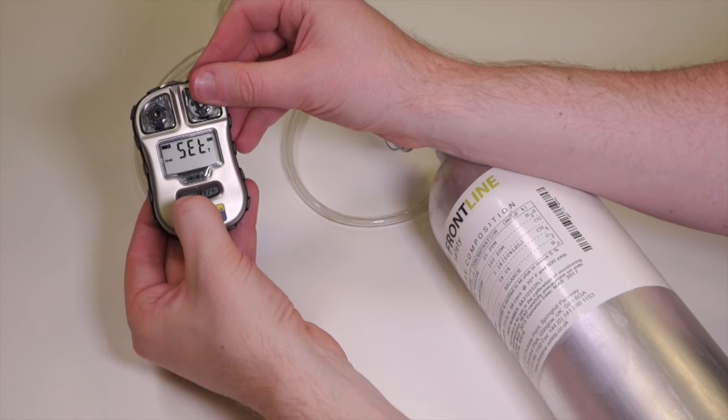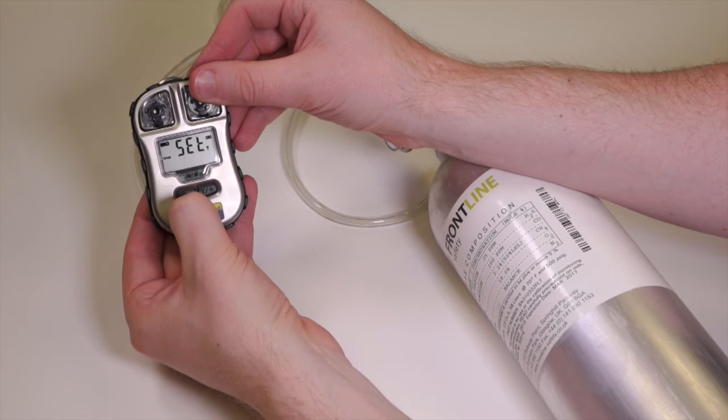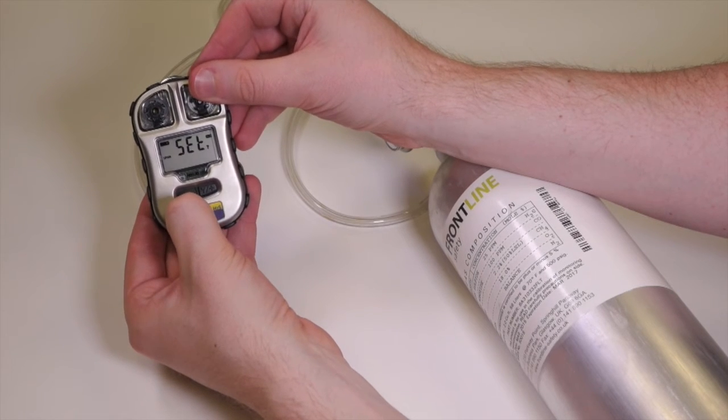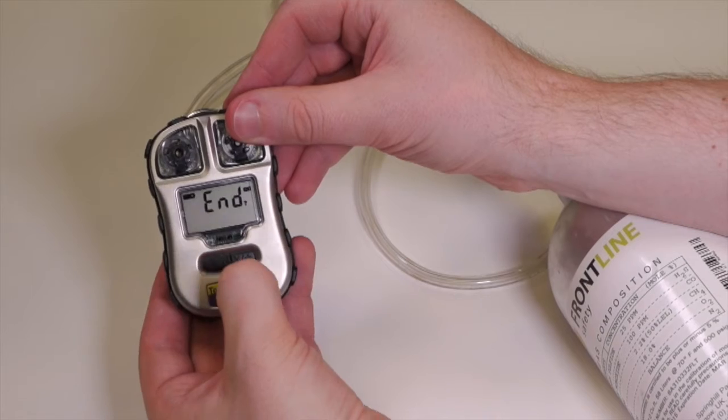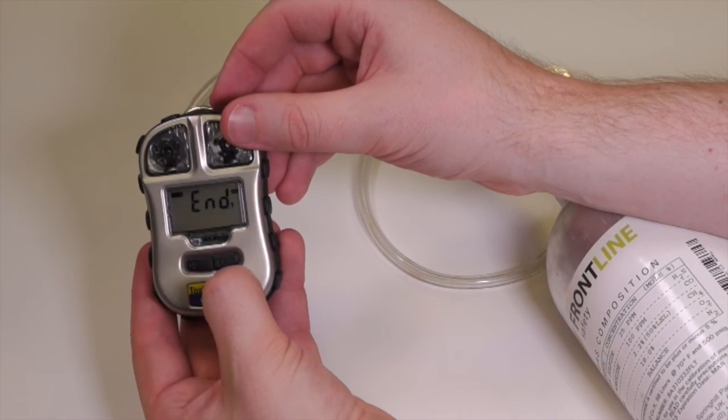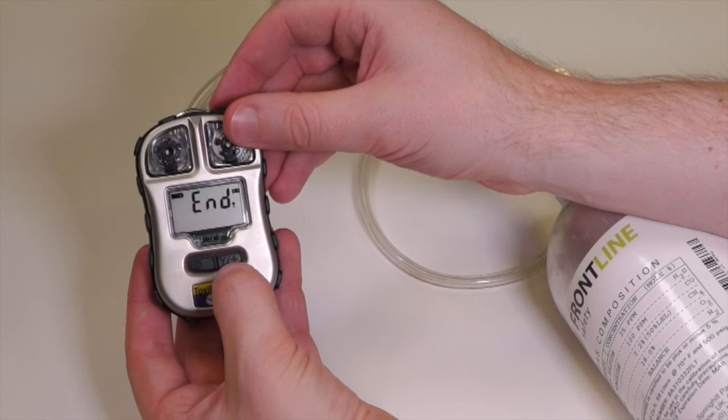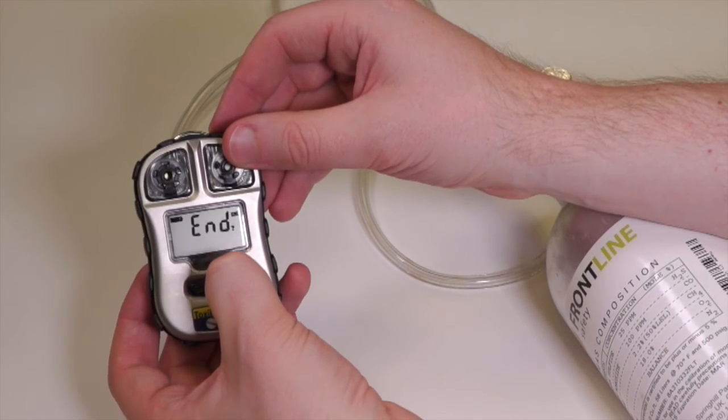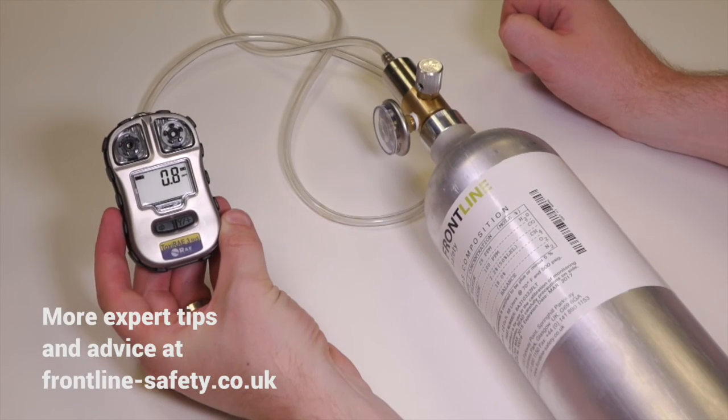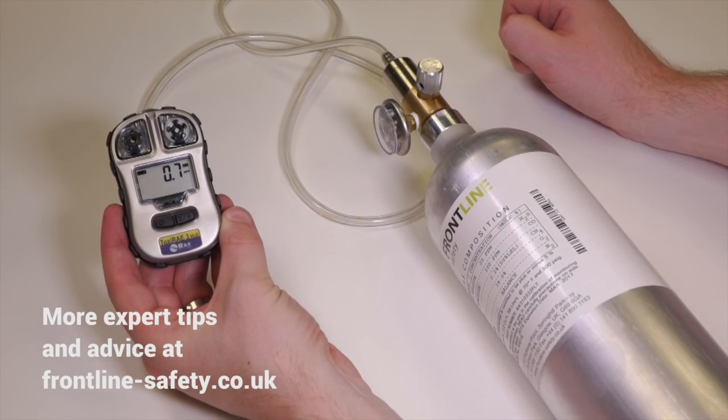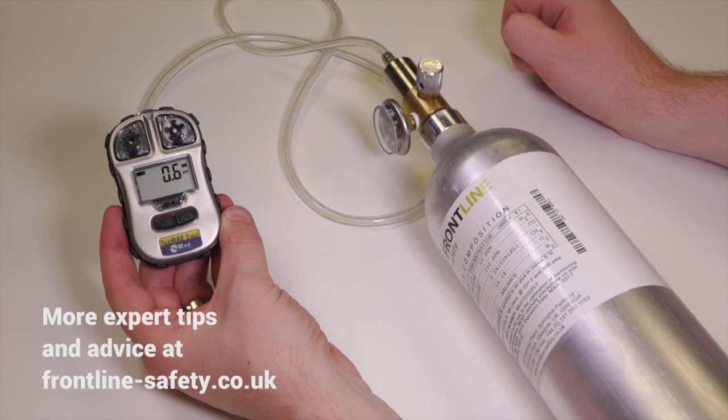So the calibration is now complete so you just need to get back to measure mode and you do that by using the left hand button just to navigate your way through the menu until we get to end. Yes we want to end or get out of the calibration menu so acknowledge it by saying yes and that takes us back to measure mode. So that's how quick and easy it is to calibrate the ToxiRAE 3 H2S from RAE Systems.